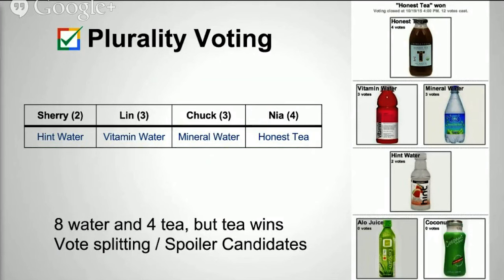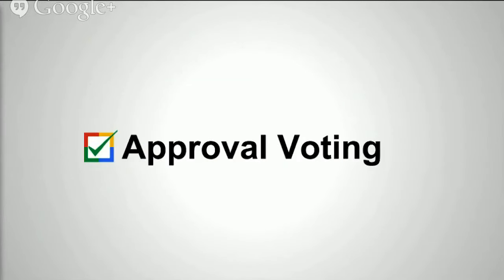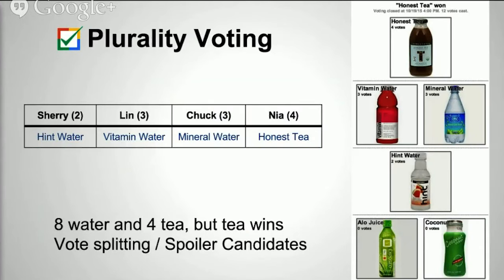Plurality has some major difficulties. In terms of the preferences table, what we did is take the first row and ignore all the other rows — we threw away a lot of valuable information, which is part of why we got a poor result. With approval voting, we're going to let more of the information get into the system.